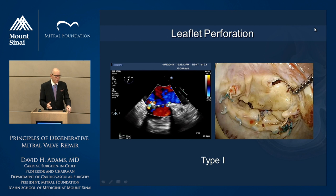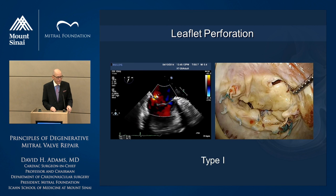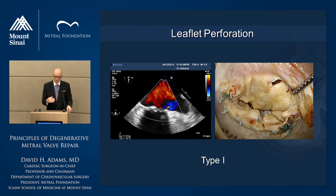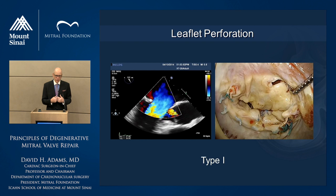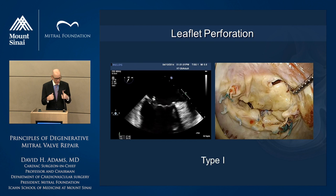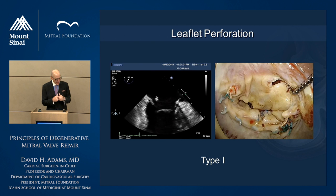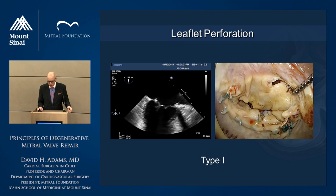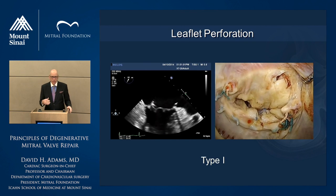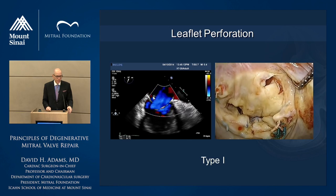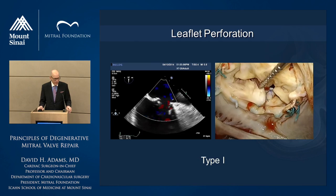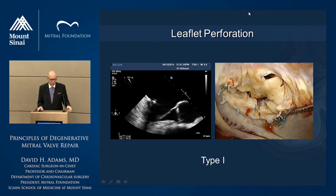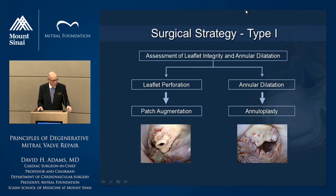For completeness, leaflet perforations are another way to have severe regurgitation with normal leaflet motion. In patients where the leaflets come into the plane of the annulus and you have severe regurgitation, you always have to think about leaflet or annular perforation. That's easy to think about in the context of endocarditis, but also post-repair — it's a common source of residual leak that we look for.